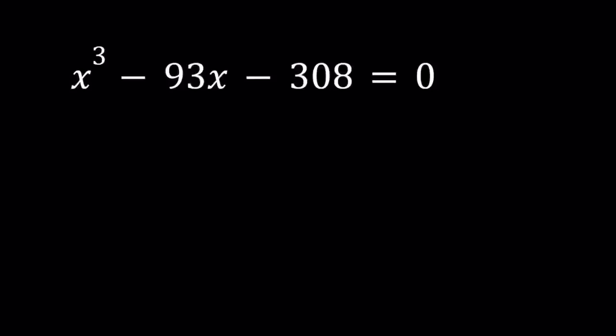Hello everyone. In this video, we're going to be solving an interesting cubic equation. We have x cubed minus 93x minus 308 equals 0, and we're going to be finding the values of x.